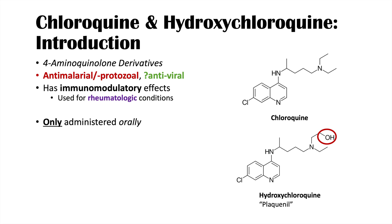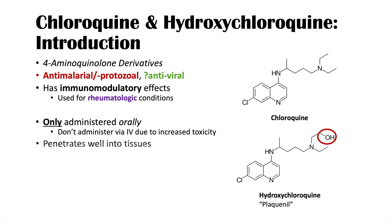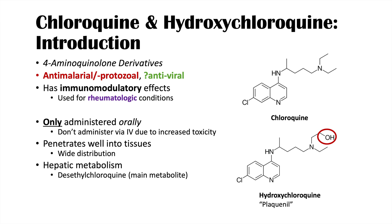These medications are only administered orally. You never want to use them IV because they have increased toxicity with IV use. They both penetrate well into tissues and have wide distribution. After ingestion, these are both primarily metabolized in the liver — hepatic metabolism. The main metabolite is desethylchloroquine. They are mainly excreted in the urine, about 70% of it, and they have a half-life of about three to five days.